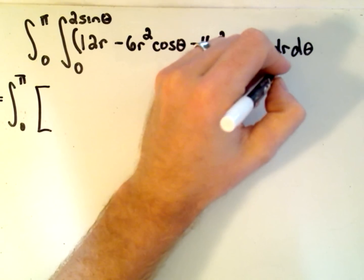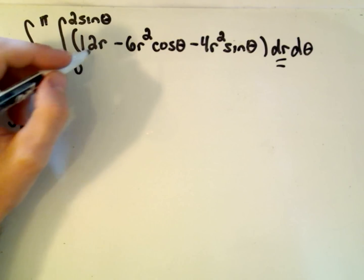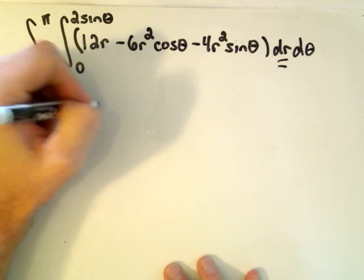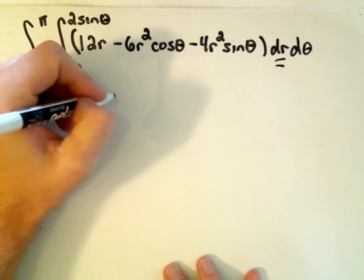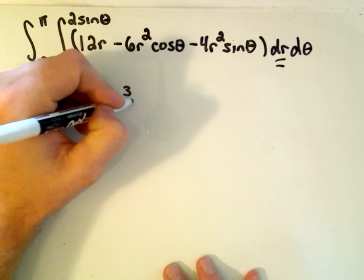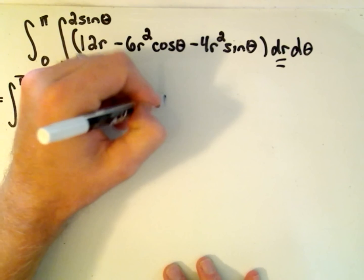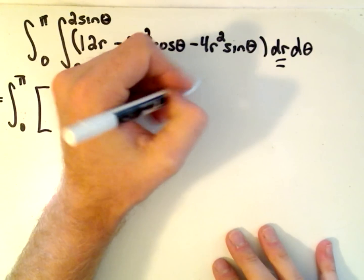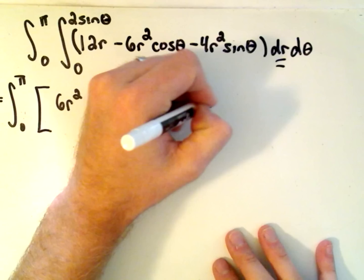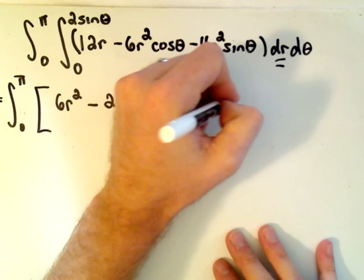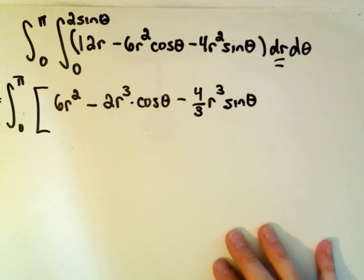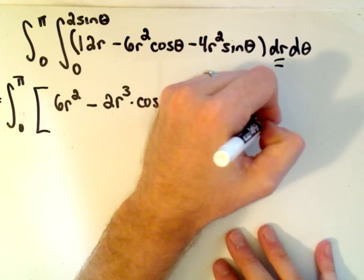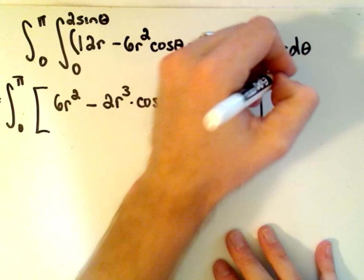Okay, we're integrating with respect to r in the first part. So, we'll get 12r² over 2, or 6r². We would get 6r³ over 3, or 2r³. And remember, cosine θ we're treating just like a constant, because we're integrating with respect to r.